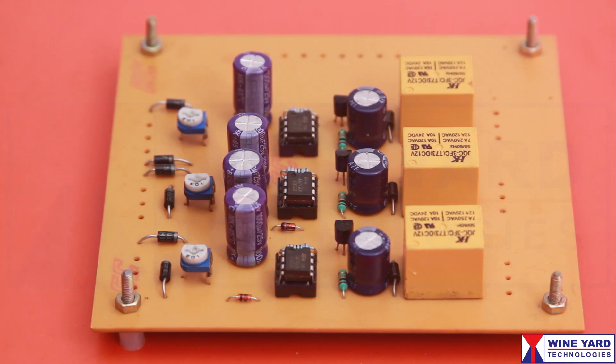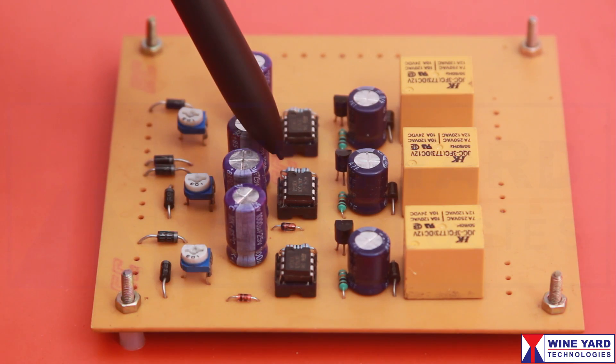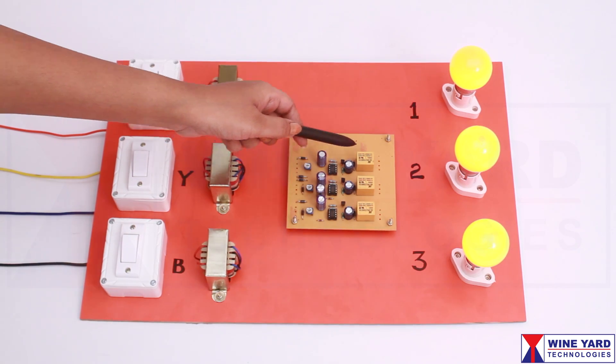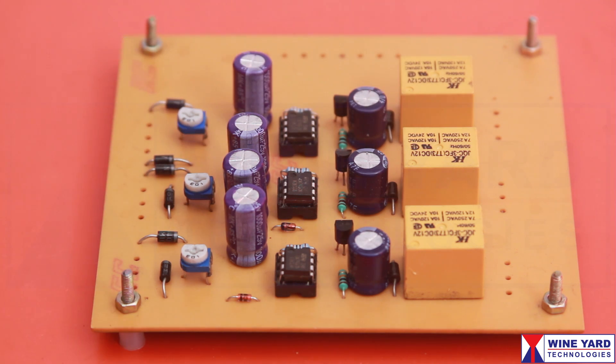We are using LM741 op amps to detect the phase availability. In case any phase is absent, these relays are used to switch the specific load to an active phase.